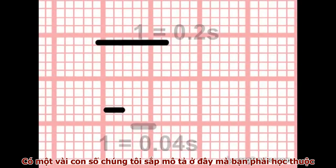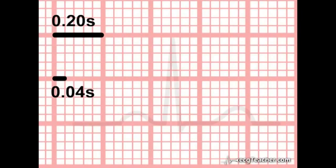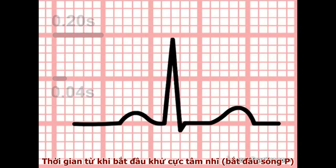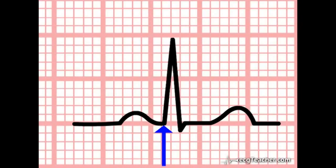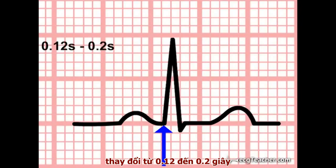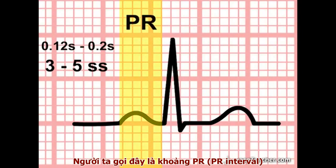There are a few numbers coming up now which you simply must learn. In a normal heart, the time between the onset of atrial depolarisation — the beginning of the P wave — and the onset of ventricular depolarisation — the beginning of the QRS complex — varies between 0.12 and 0.2 seconds, or between three and five small squares. This is the PR interval.